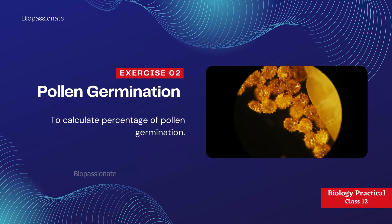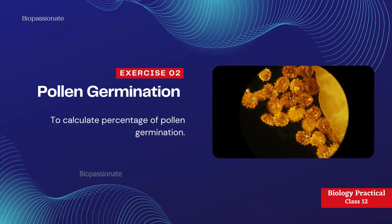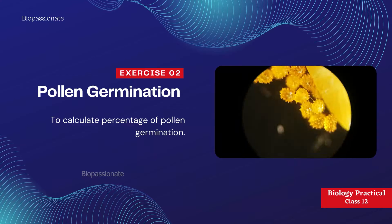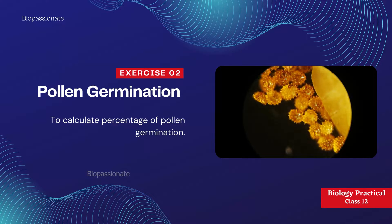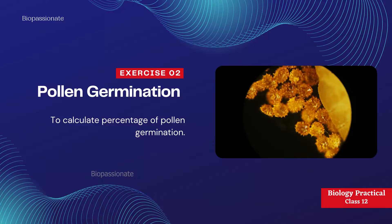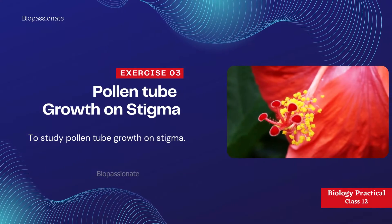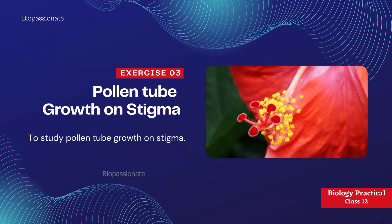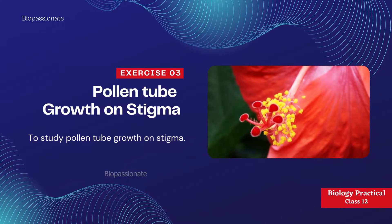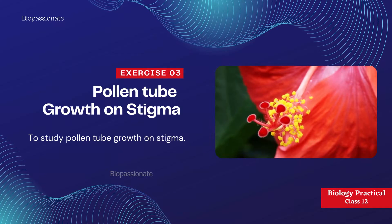Exercise number two: pollen germination — to calculate the percentage of pollen germination. It's a practical experiment and very important for the examination. Exercise number three: pollen tube growth on stigma — to study the pollen tube growth on stigma.